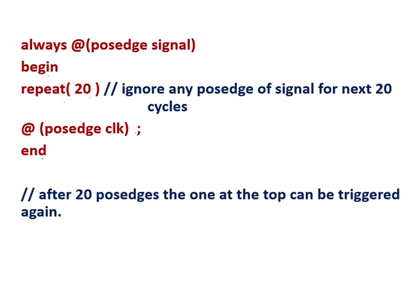So this repeat 20 means: once the positive edge of signal comes — it is not positive edge of clock, it is one signal — once the positive edge of signal comes, then it repeats 20 times. It ignores any positive edge of signal for the next 20 clock cycles. This statement doesn't depend on the positive edge of signal again for those 20 clock cycles.